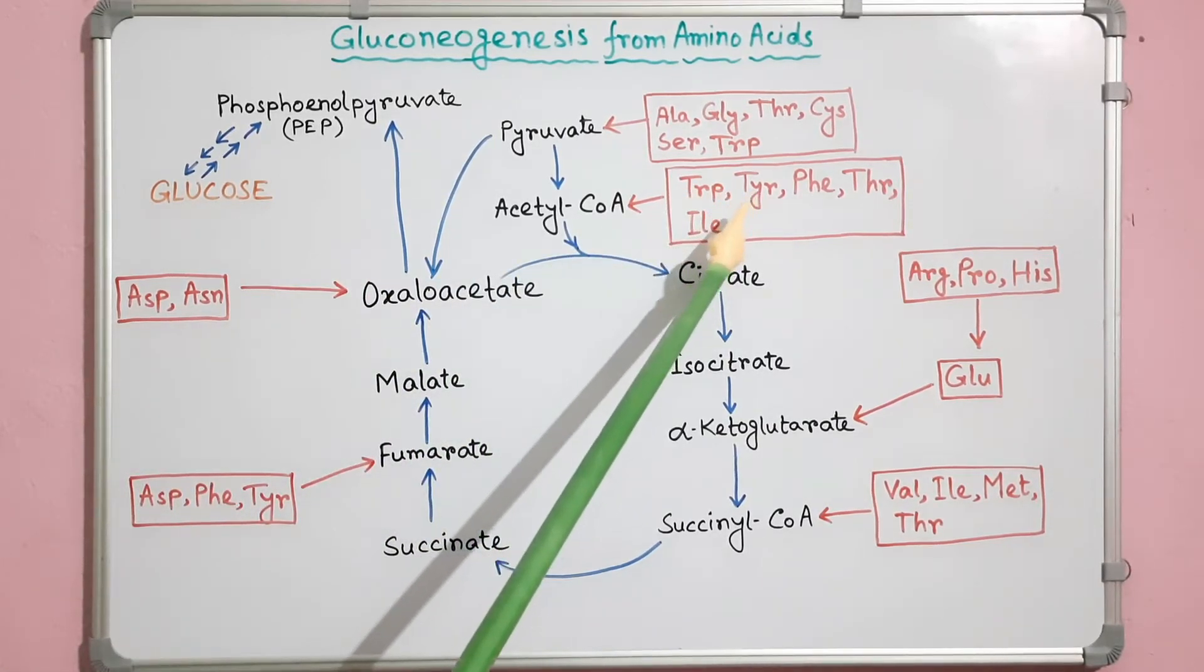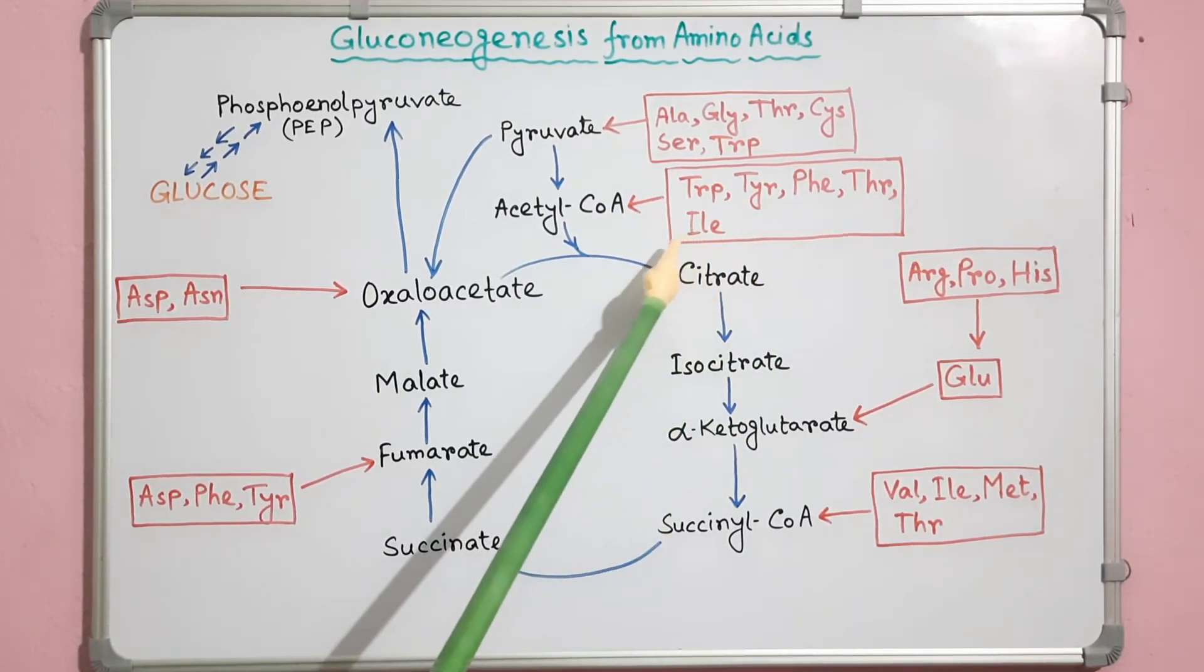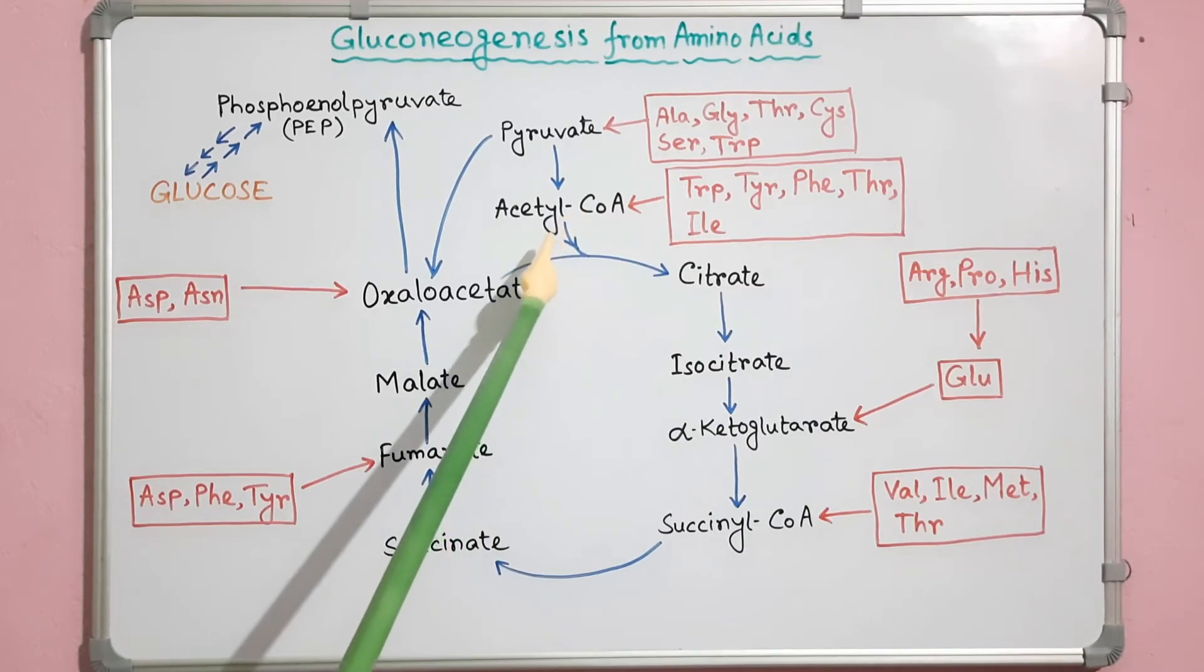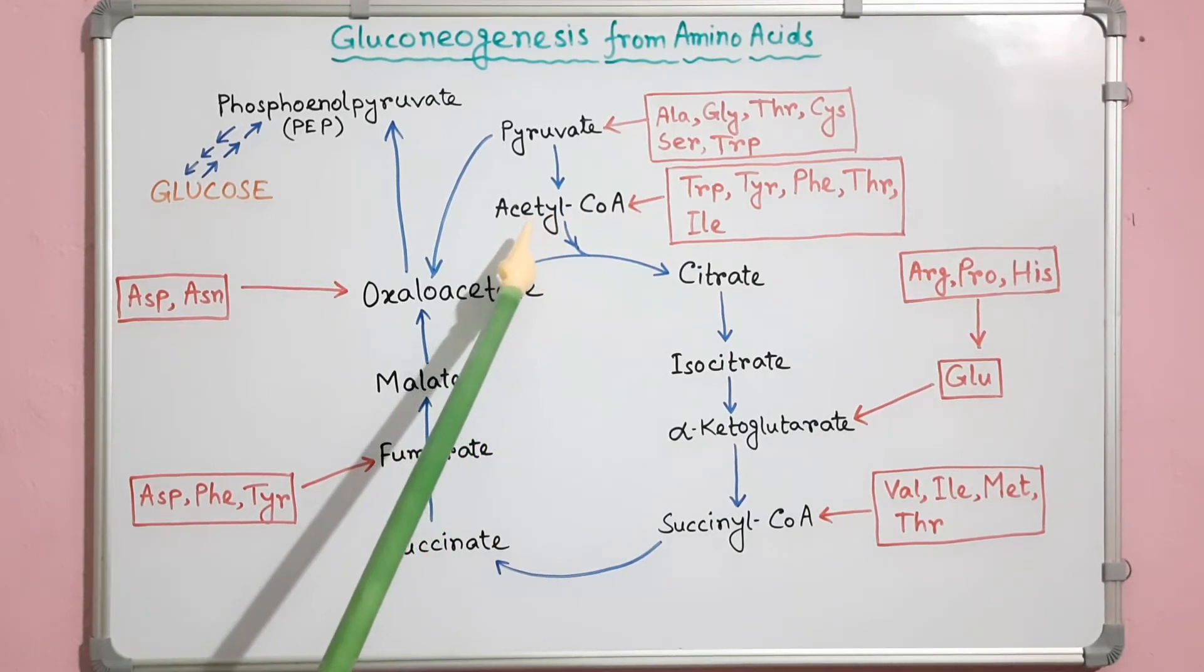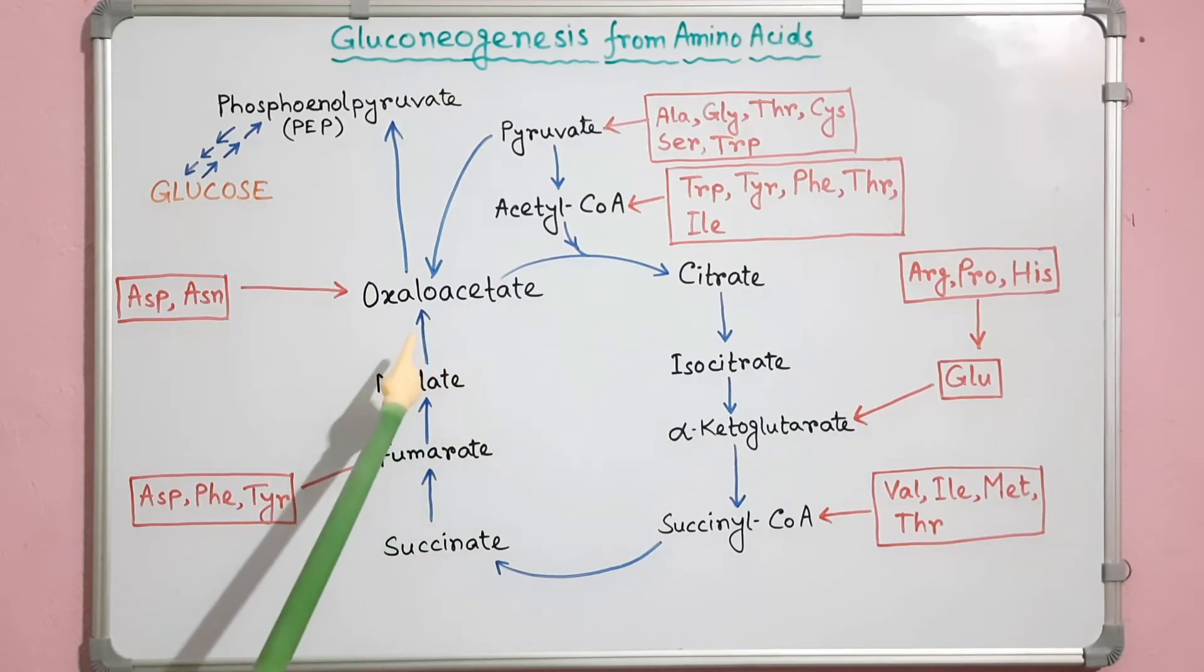Tryptophan, tyrosine, phenylalanine, threonine, and isoleucine can convert to acetyl-CoA, which then enters into the TCA cycle.